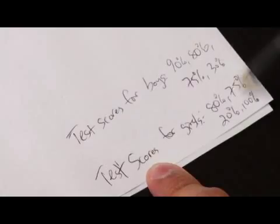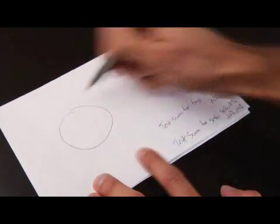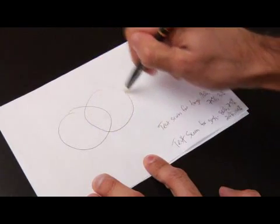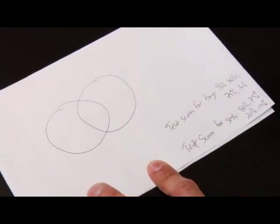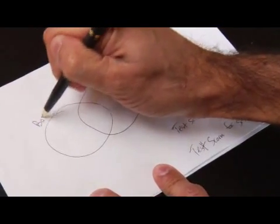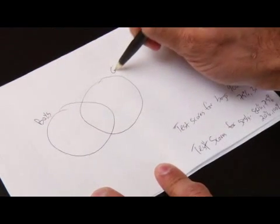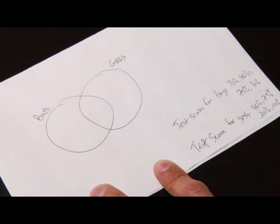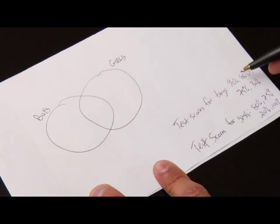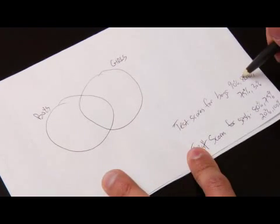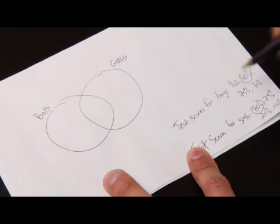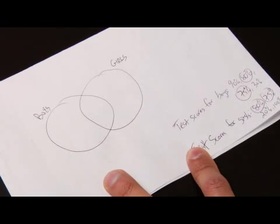Now that we have the test scores for the boys and girls, we'll use a Venn diagram to illustrate these scores and we'll also use that to see what they have in common. So we'll have boys scores on the left, girls scores on the right. For boys, we have 90, and we realize from our scores that 80 is common and 75 is common for both boys and girls.